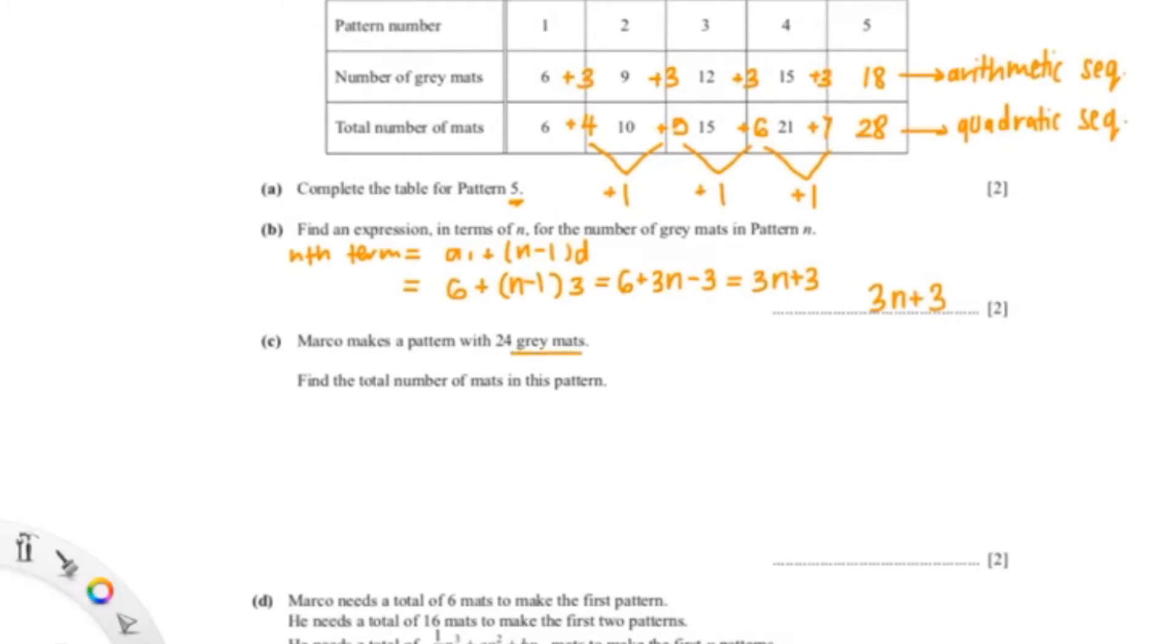So the next question is talking about 24 grey mats equals to the n-pattern. Our n-term is 3n plus 3, so we can just equal that to 24. Then we can find n, which is 7, so now they're talking about the 7th n-term. And since they're asking for the total number of mats in the pattern, let me just draw this grid continuing from the table above.